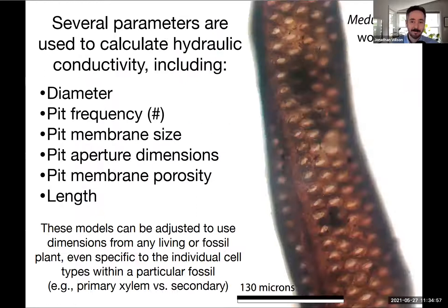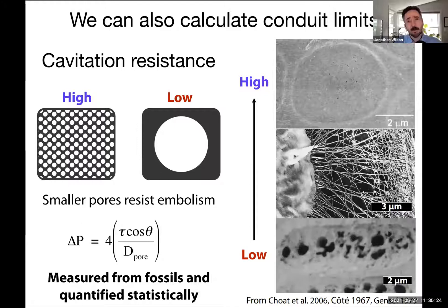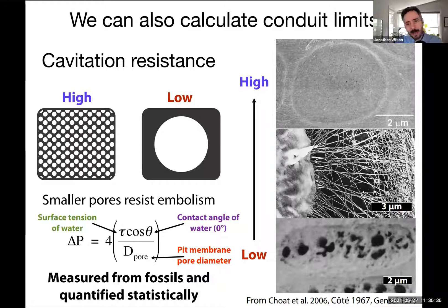Anywhere we have anatomically preserved xylem cells, they can be modeled — whether that's silicified or charcoalified material — in any organ with xylem: roots, stems, or leaves. We measure parameters to calculate hydraulic conductivity and quantify the flow rate through the xylem in these different plants. We can also calculate how vulnerable xylem cells are based on their pit structure, using the capillarity equation to determine how easy it is for air to pass from one cell to another. We can measure these properties from SEM images and quantify them statistically in plants.